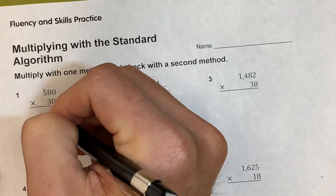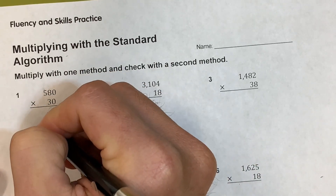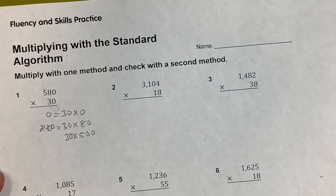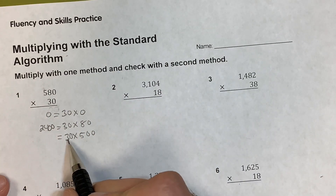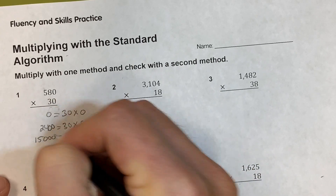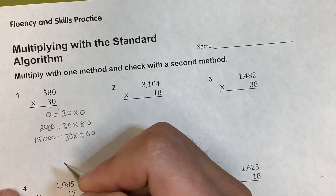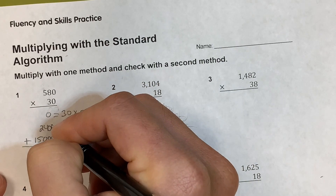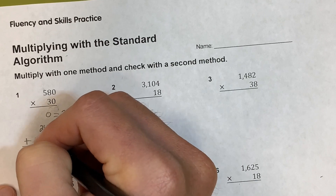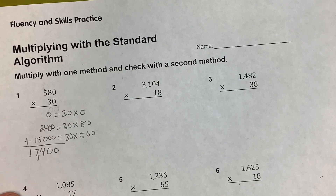30 times 0 is 0. For 30 times 80, we do 3 times 8 is 24, then count the zeros — so that's 2,400. For 30 times 500, we do 3 times 5 is 15, count three zeros — so 30 times 500 is 15,000. Adding them: 0 plus 0 is 0, 0 plus 0 is 0, 4 plus 0 is 4, 5 plus 2 is 7, and 1 by itself — giving us 17,400.